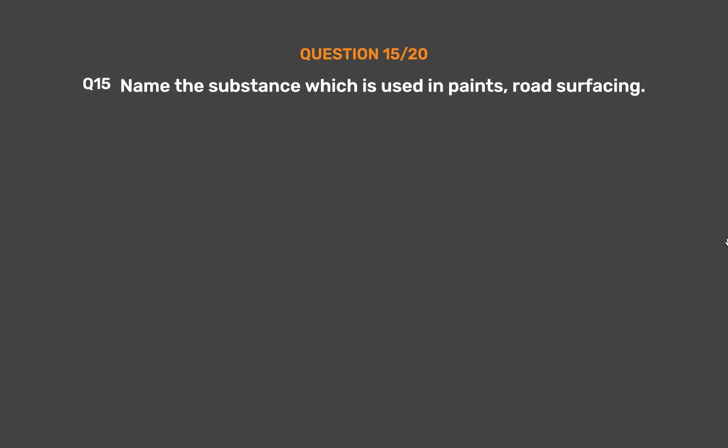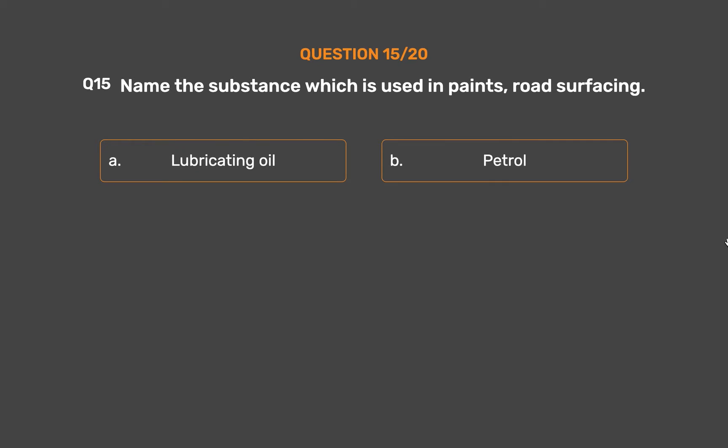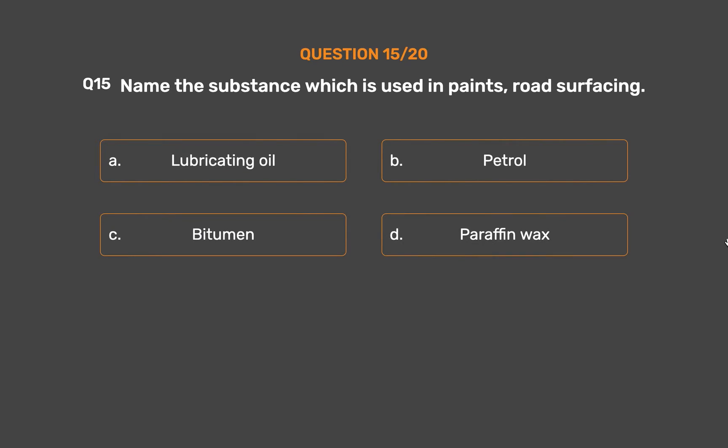Question number 15: Name the substance which is used in paints and road surfacing. Option A: Lubricating oil. Option B: Petrol. Option C: Bitumen. Option D: Paraffin wax.